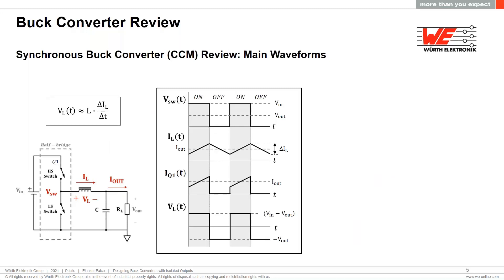Here we can see the basic converter waveforms in continuous conduction mode (CCM), which means the inductor still keeps energy stored before the end of each switching cycle. When the high-side MOSFET is turned on, the voltage across the inductor is the difference between the input voltage and the output voltage, and the inductor current ramps up with a first-order slope. When the high-side MOSFET is turned off, the voltage across the inductor equals the inverted output voltage and the inductor current decreases with a first-order slope. The inductor current at the beginning and end of a full switching cycle must be equal in steady-state operation.